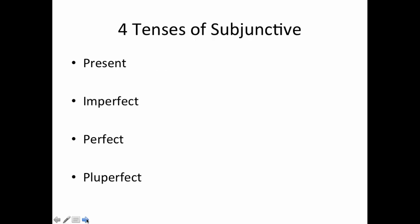There are four tenses of the subjunctive: the present, the imperfect, the perfect, and the pluperfect. We're only going to deal with two of them now — the imperfect subjunctive and then the pluperfect subjunctive.